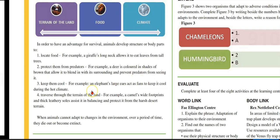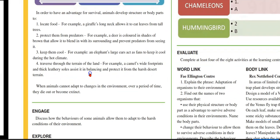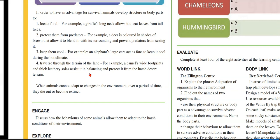Three, keep them cool. For example, an elephant's large ears act like fans to keep it cool during the hot climate. Four, traverse through the terrain of the land. For example, a camel's wide footprint and thick leathery soles assist it in balancing and protect it from the harsh desert terrain.